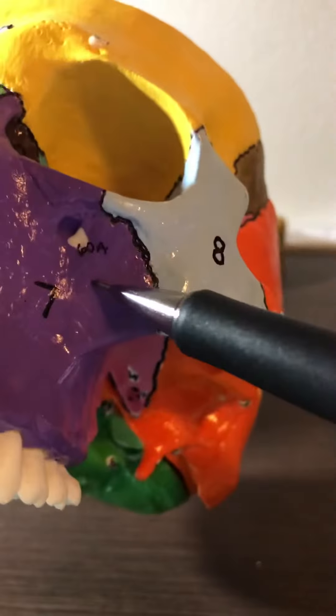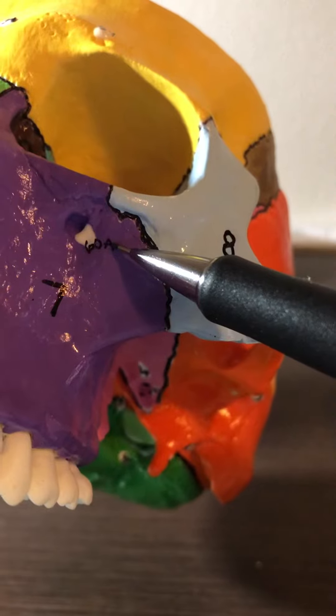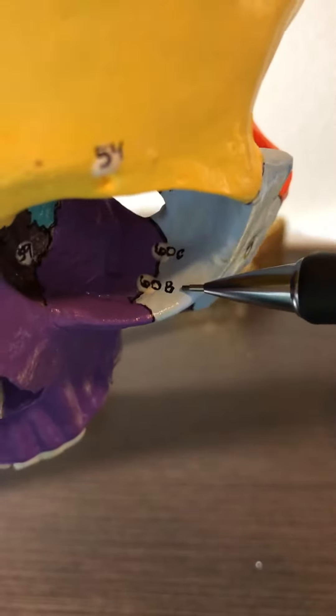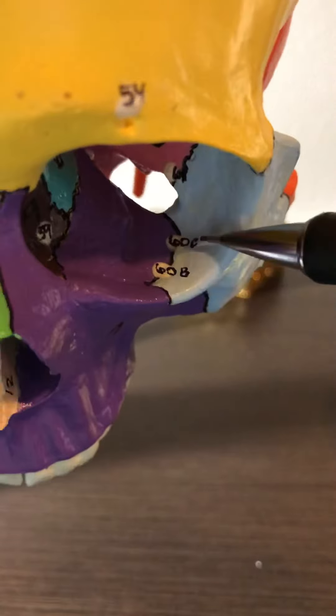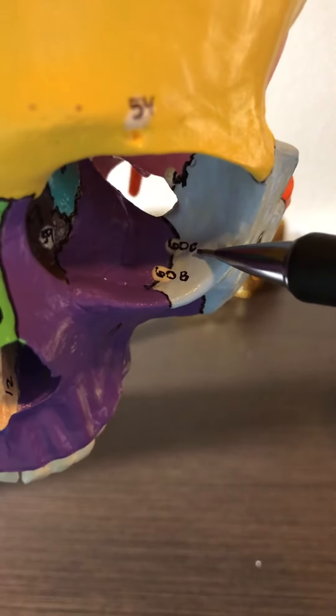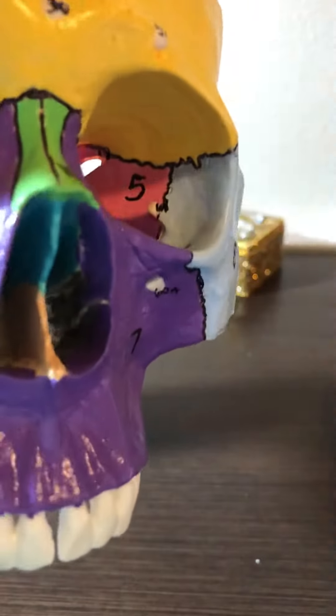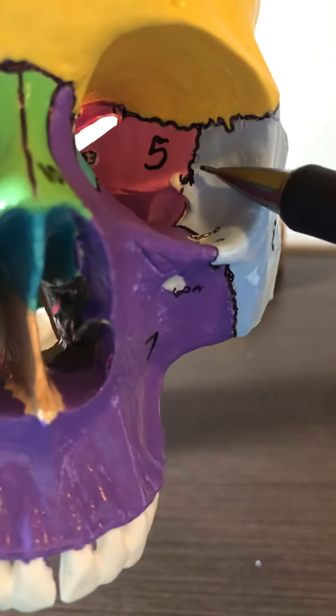Number 60a is the infraorbital foramen. Number 60b is the infraorbital canal. Number 60c is the infraorbital groove. Number 61 is the inferior orbital fissure.